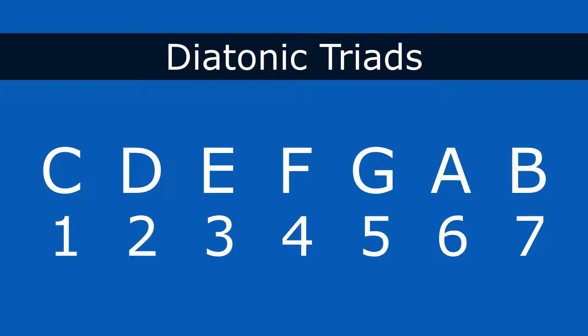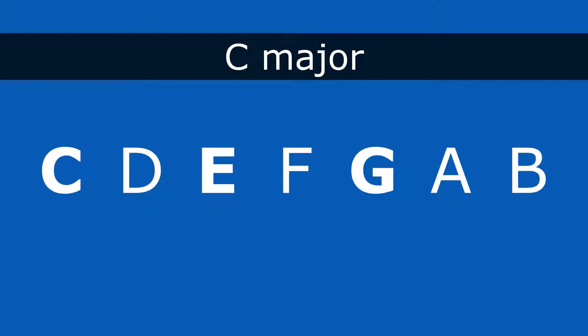So let's start with the diatonic triads. Diatonic just means in the key of. So these chords are only going to be built from that one major scale. So let's start with the first chord. If we start at C, C is the first scale degree.